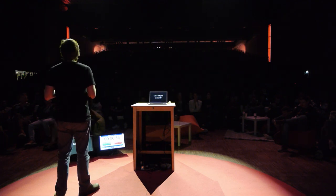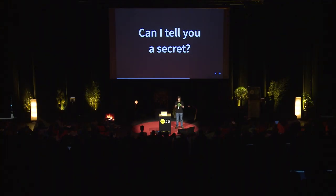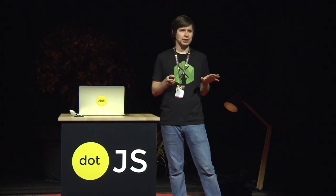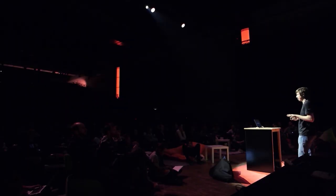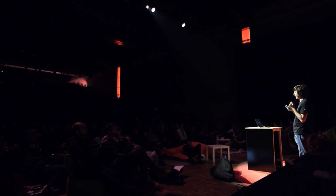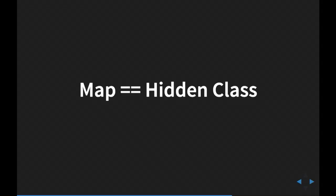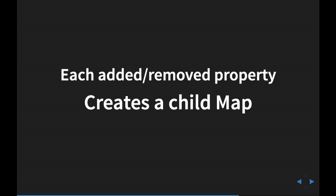Now I'd like to tell you a secret. Has anyone heard about the thing called hidden classes? Maps are the same thing as hidden classes — just a different name. And this is the reason why V8 runs fast: because it uses maps.